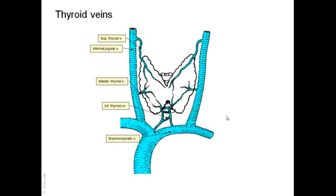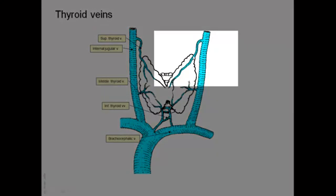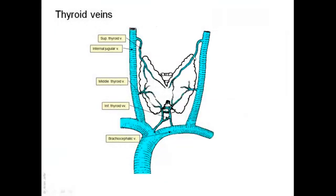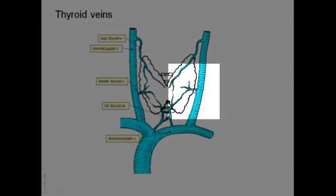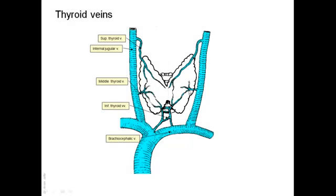The venous drainage is provided by three sets of veins: the superior thyroid vein, the middle thyroid vein, and the inferior thyroid vein. The superior thyroid vein drains from the upper pole of the gland, closely follows the superior thyroid artery, and drains into the internal jugular vein. The middle thyroid vein has no accompanying artery and also drains into the internal jugular vein.